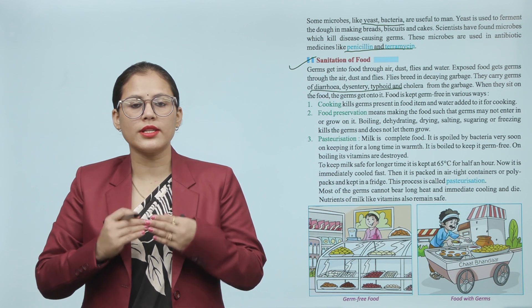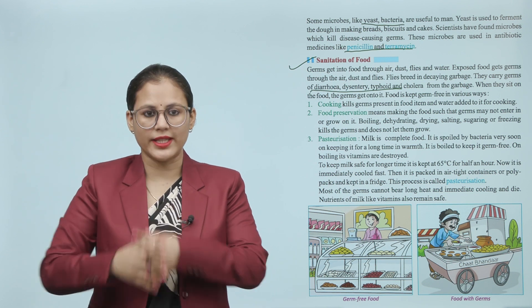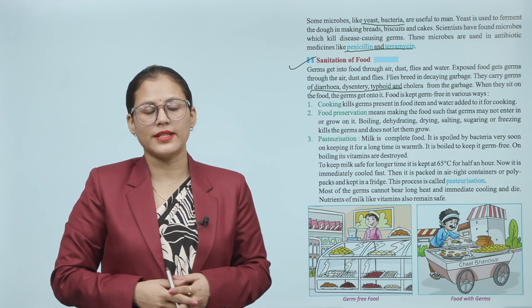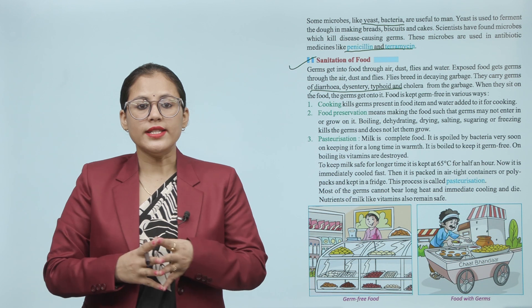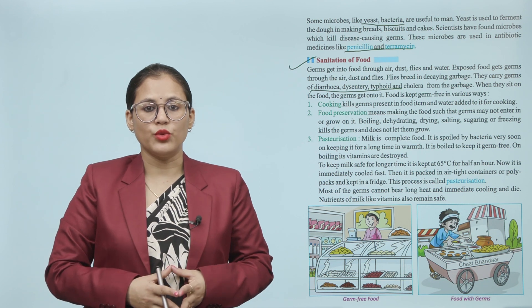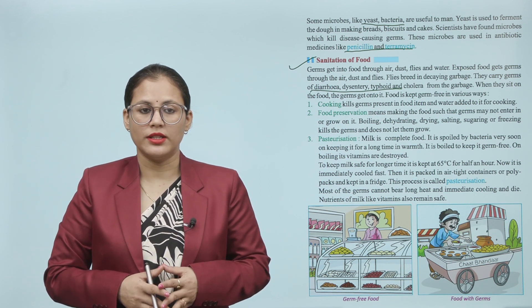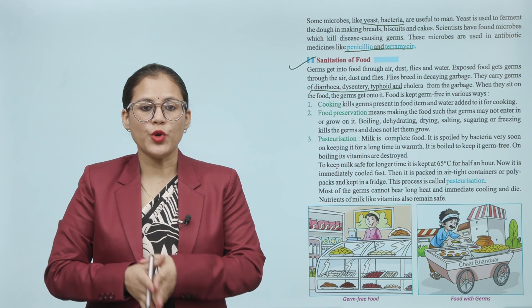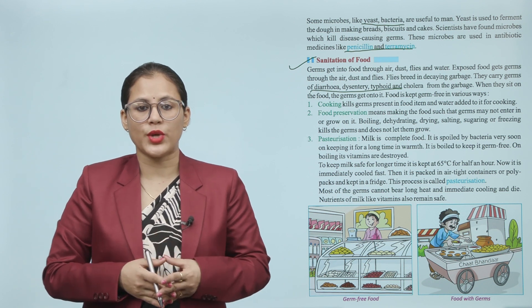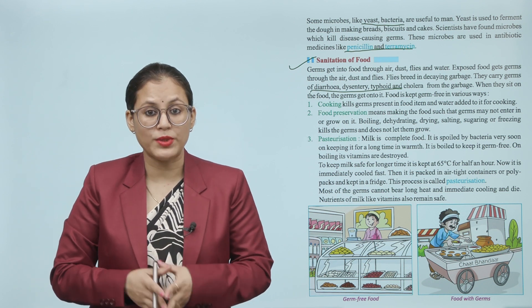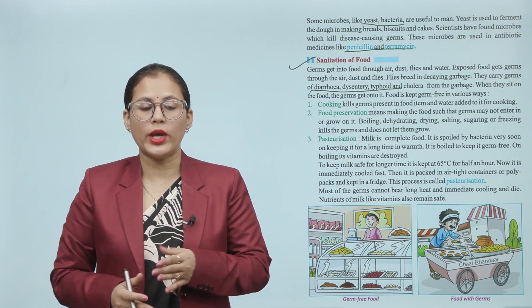So how can we keep food free from germs? Number one method is cooking. Cooking kills germs present in food items and water added to it for cooking. Number two: food preservation means making food such that germs may not enter or grow on it.